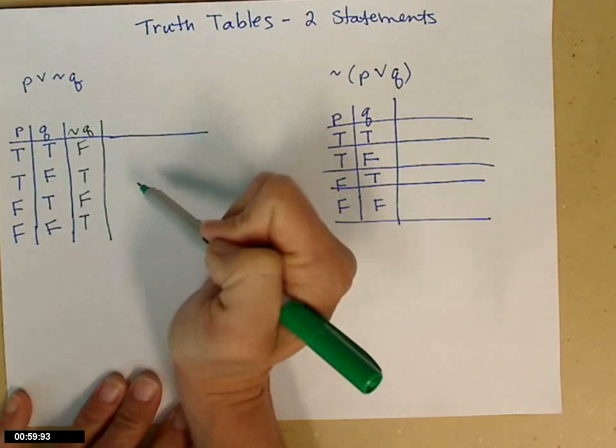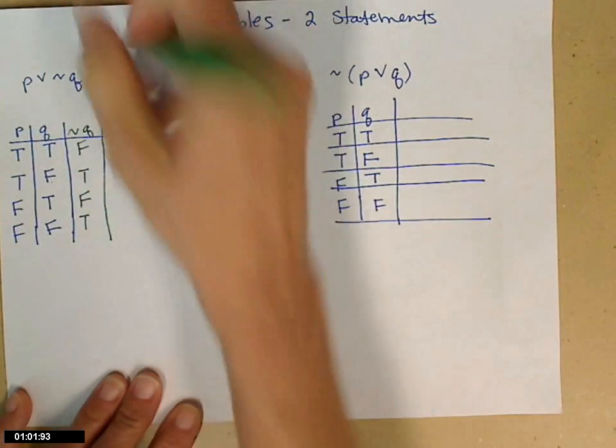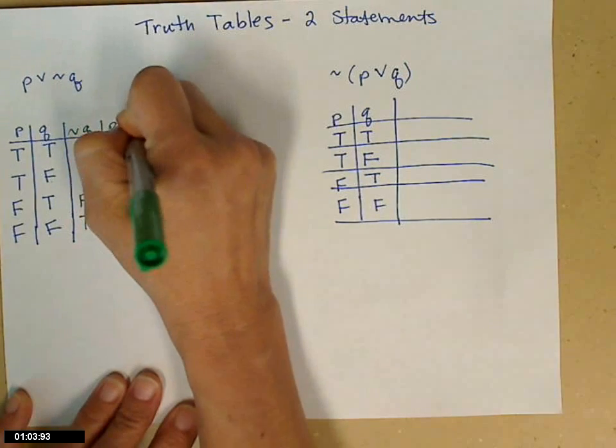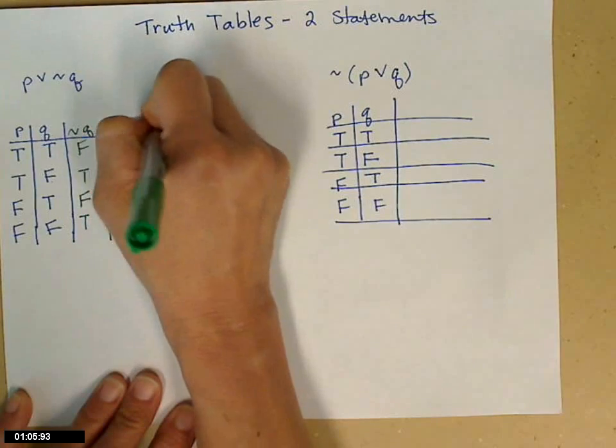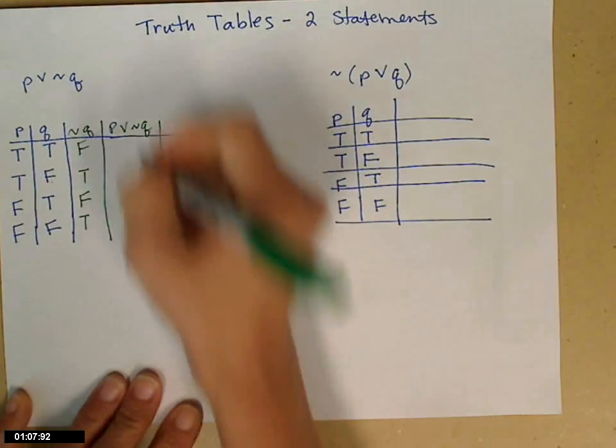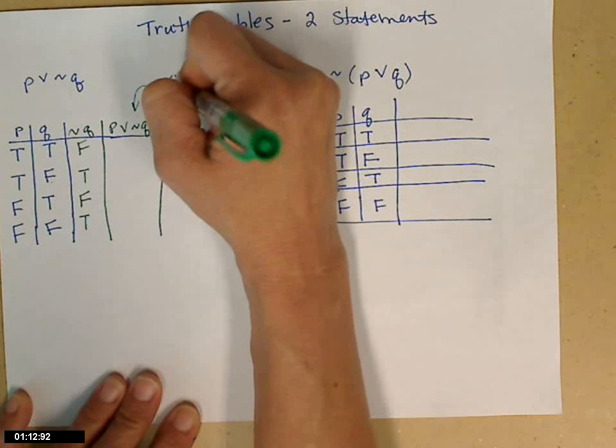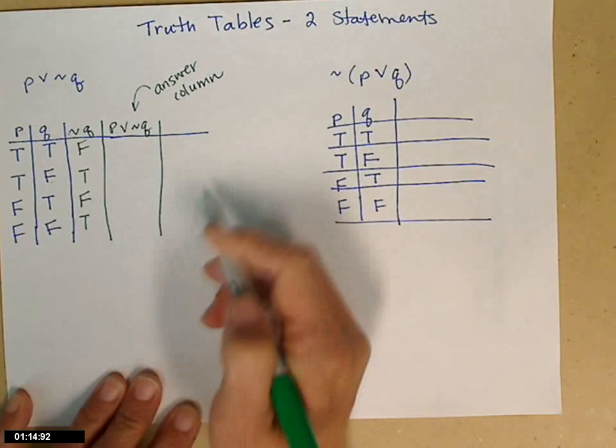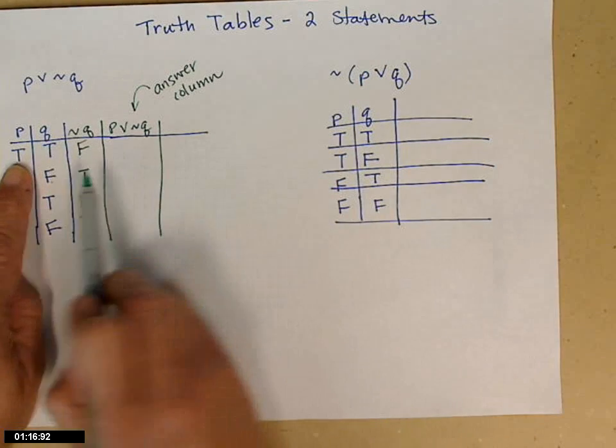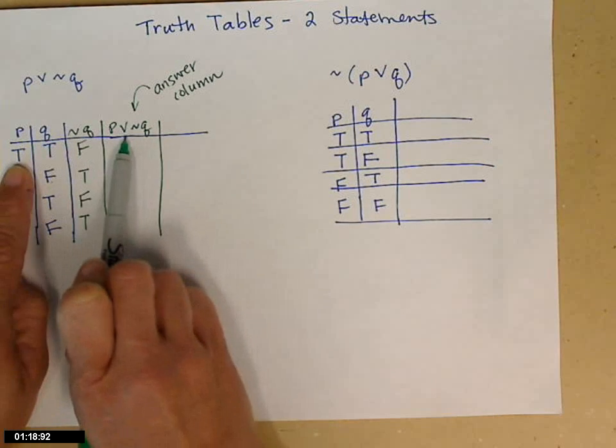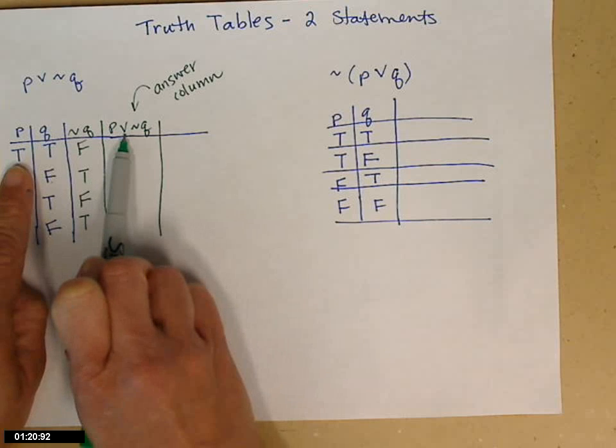And now I'm ready to combine these with the P or not Q. So when I write this final answer, by the way, this column is the answer. I'm looking at the P column and the not Q column. And it's or. The V is or.